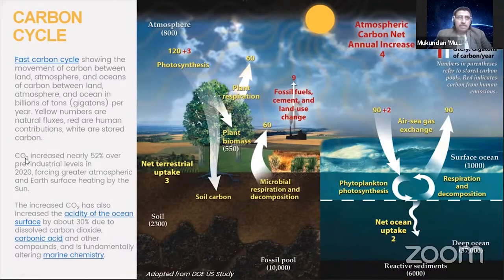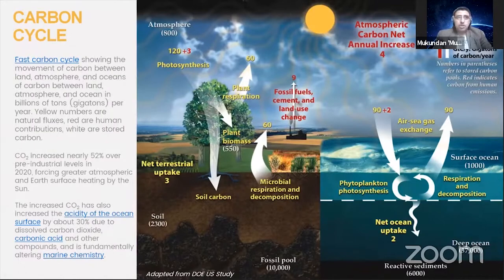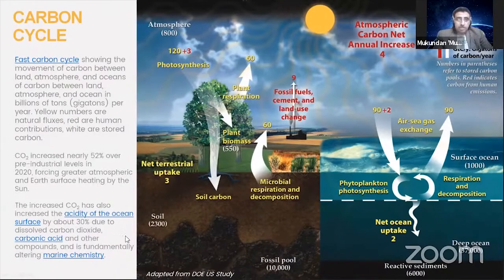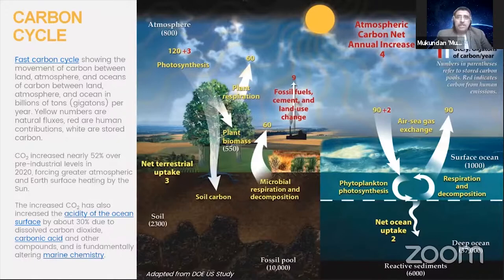From pre-industrialization levels to current 2020, there has been almost a 52% increase in CO2 in the atmosphere — that's humongous. And that's causing an increase in the acidity of the ocean surface by almost 30% due to dissolved carbon dioxide, which forms carbonic acid and other compounds that are fundamentally altering marine chemistry. These are significant changes — that's basically the carbon side.